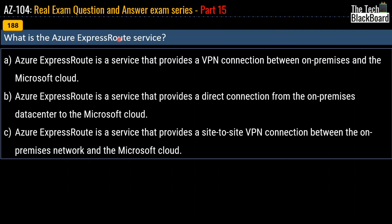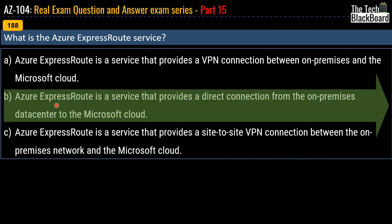Question 188: What is Azure ExpressRoute? Three definitions are provided and you have to pick the correct one. Pause the video if you want to try. The correct answer is option B: Azure ExpressRoute is a service that provides a direct connection from an on-premises data center to the Microsoft Cloud.